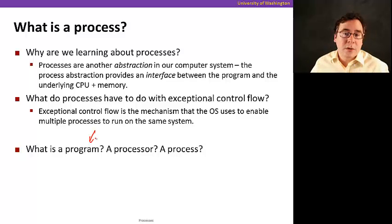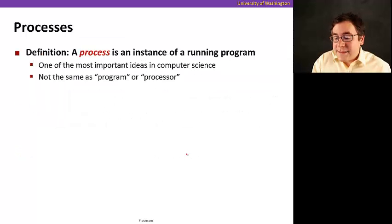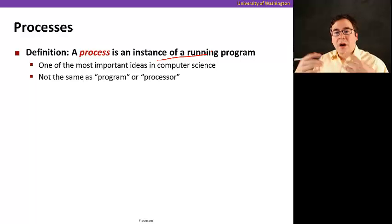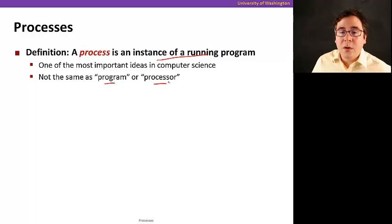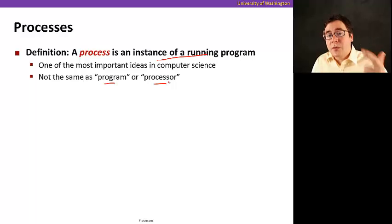So what is a program? A program is just a list of instructions, a collection of instructions and data that form your code, that form your software. A processor, obviously, is the piece of hardware that runs the instructions in the program. A process is an instance of a running program. When you start running a program, you create a process to run the program. Therefore, the process is an instance of a running program. So that's a very important idea in computer science, and it's not the same as a program or a processor. A processor executes instructions, and a program is a collection of instructions and data. A process is an instance of a program running in a processor.